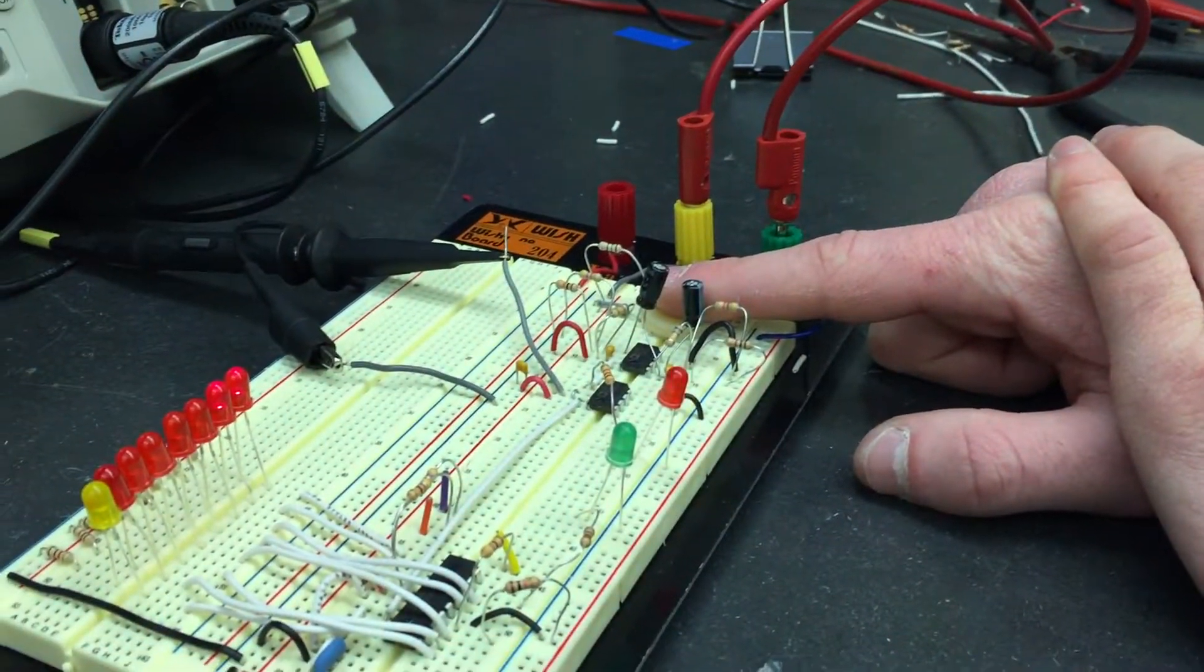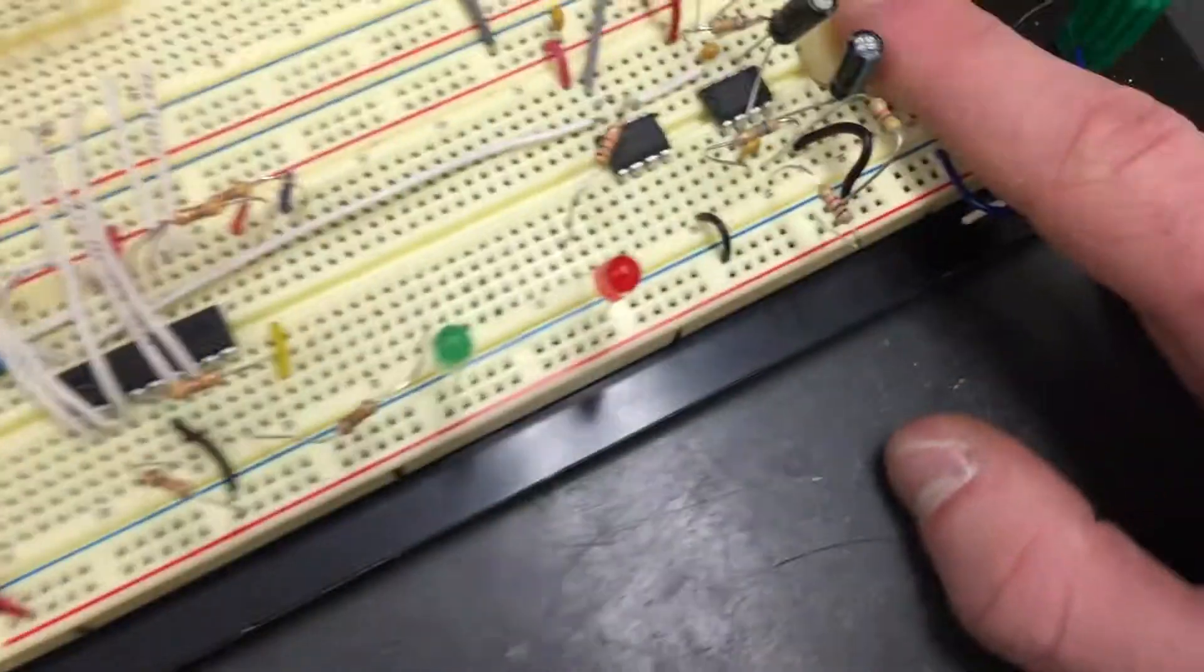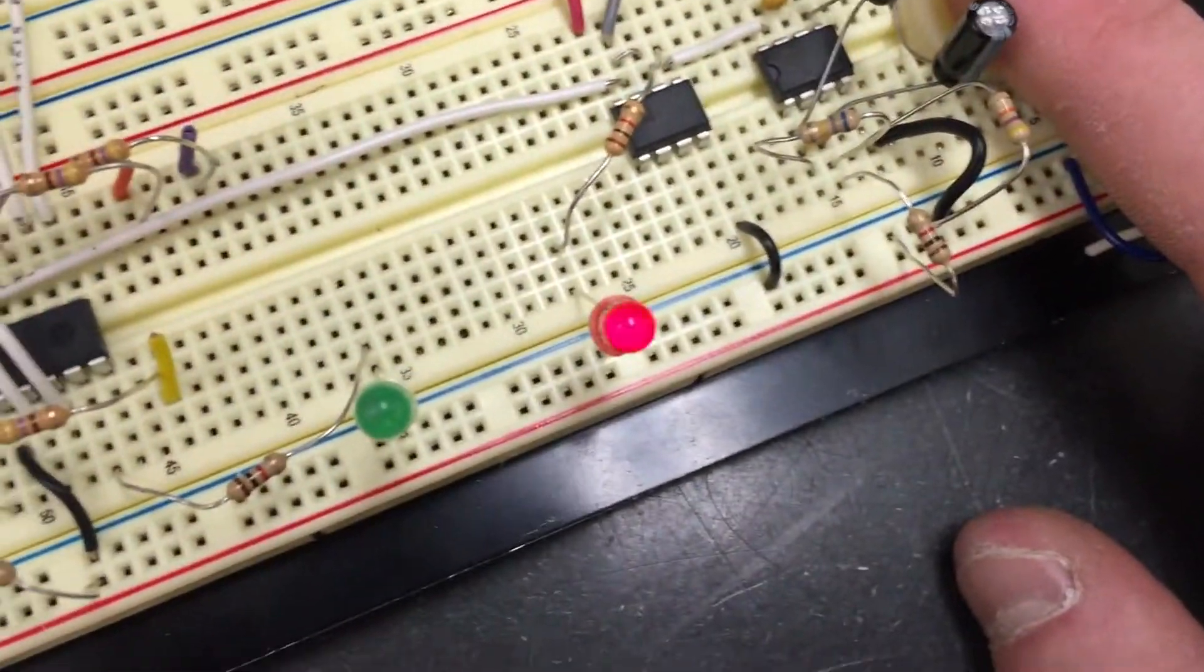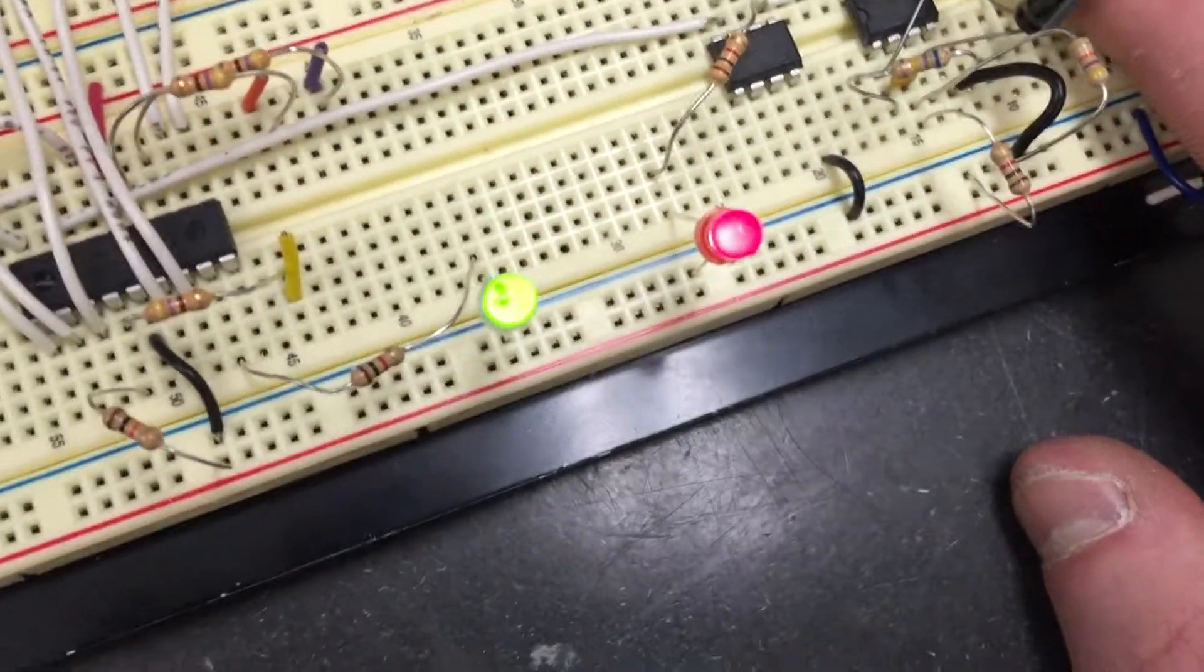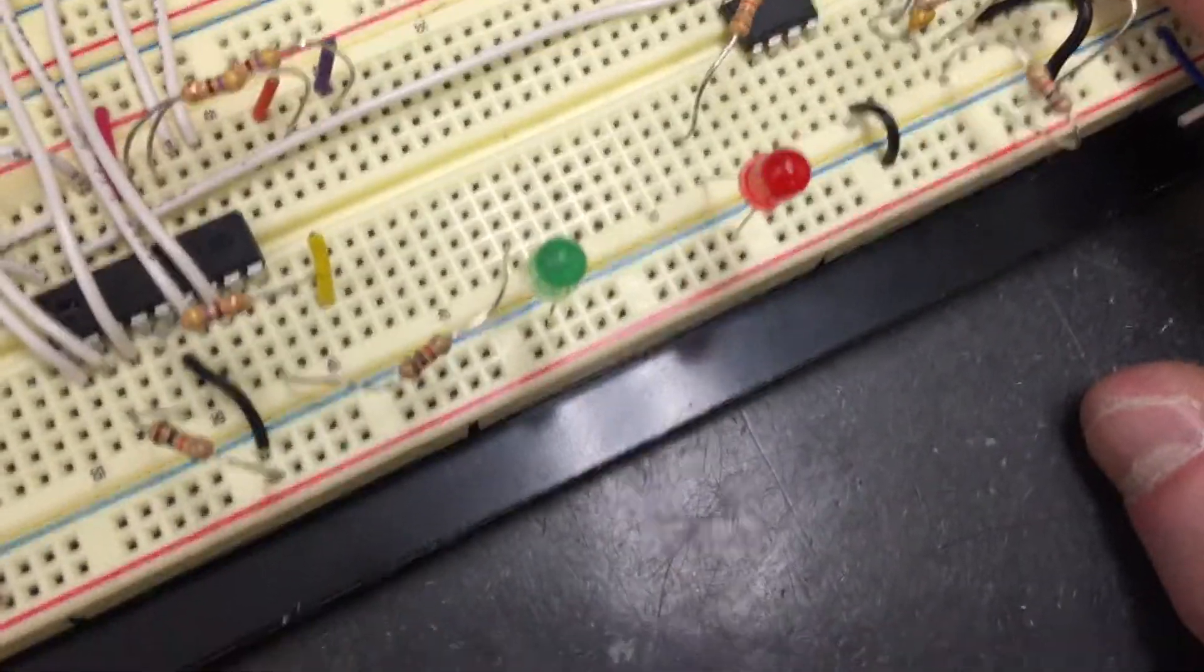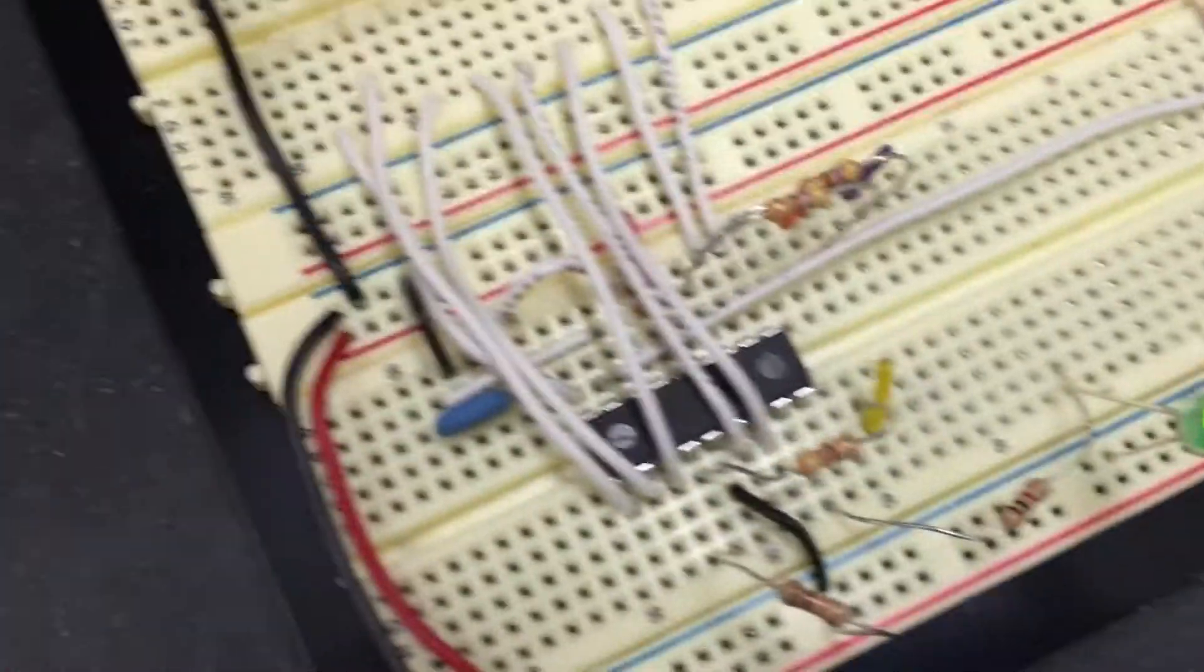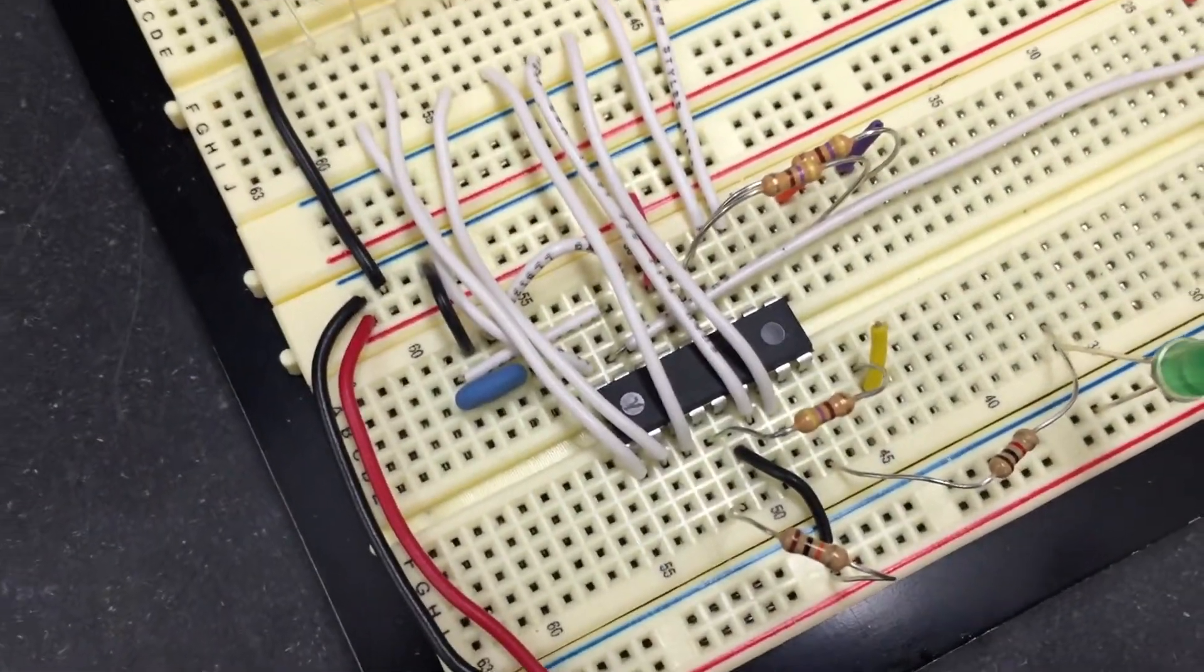This is a heart rate pulse detector. He's got his finger over a photodiode and the red LED is triggering every time that an analog pulse is detected from the photodiode over here. The analog signal is piped into a microcontroller.